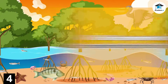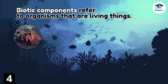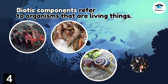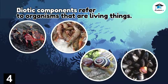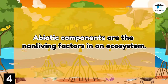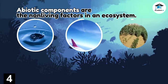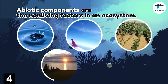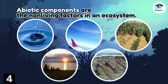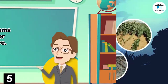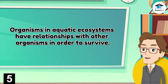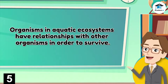Biotic components refer to organisms that are living things, which include crabs, shrimps, snails, and mussels. Abiotic components are the non-living factors in an ecosystem, which include water, air, soil, sunlight, and even rocks.